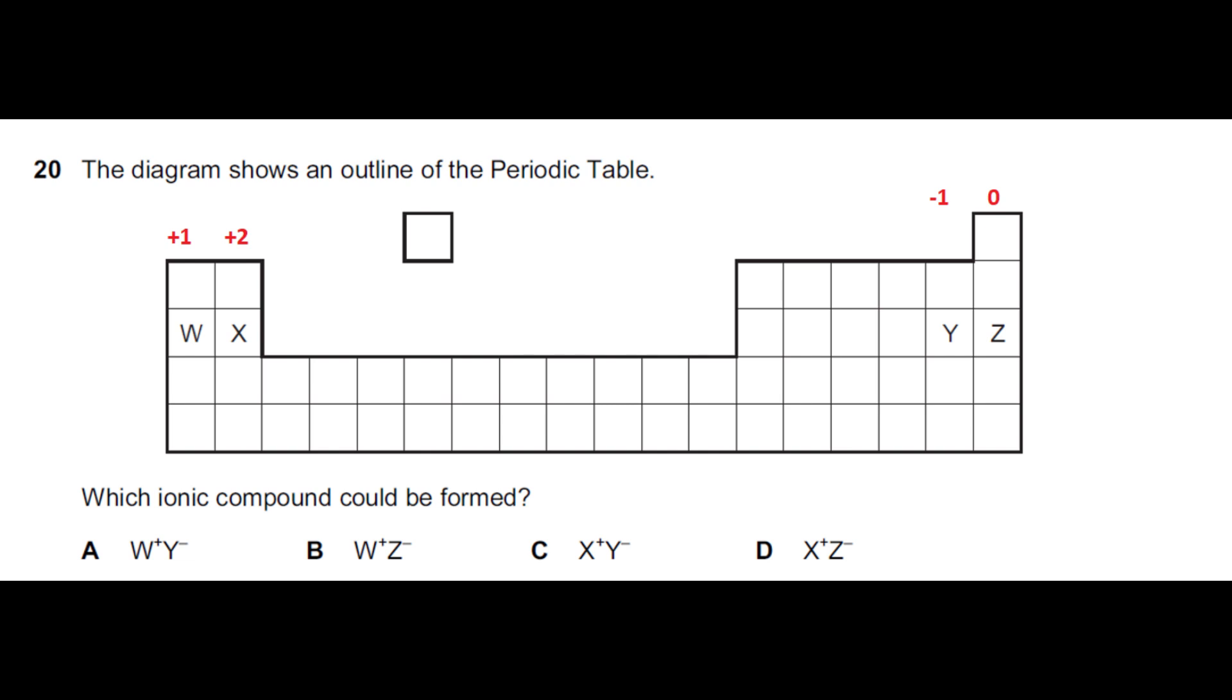And we have elements just adjacent to the noble gases in group 7. So group 7 are non-metals with a valency minus 1. So which ionic compound could be formed?